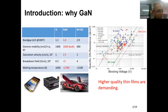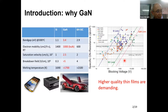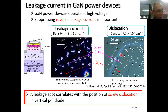This picture shows the state-of-the-art specific on-resistance versus blocking voltage for various power switching devices reported so far. Gallium nitride material, for example hetero gallium nitride devices, sits in this area with high blocking voltage and high mobility. However, in power devices we need higher quality thin film, and clarification of the epitaxial growth mechanism is demanded.